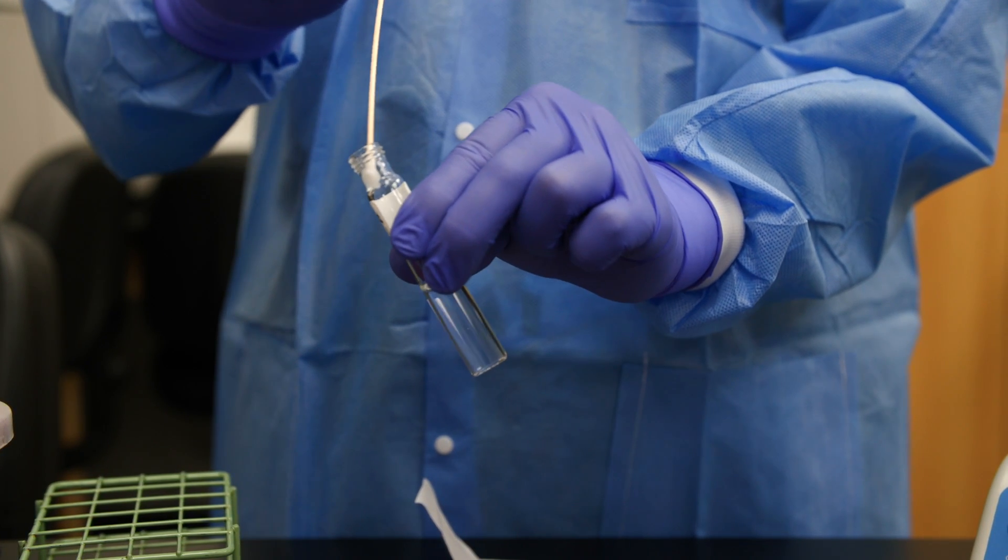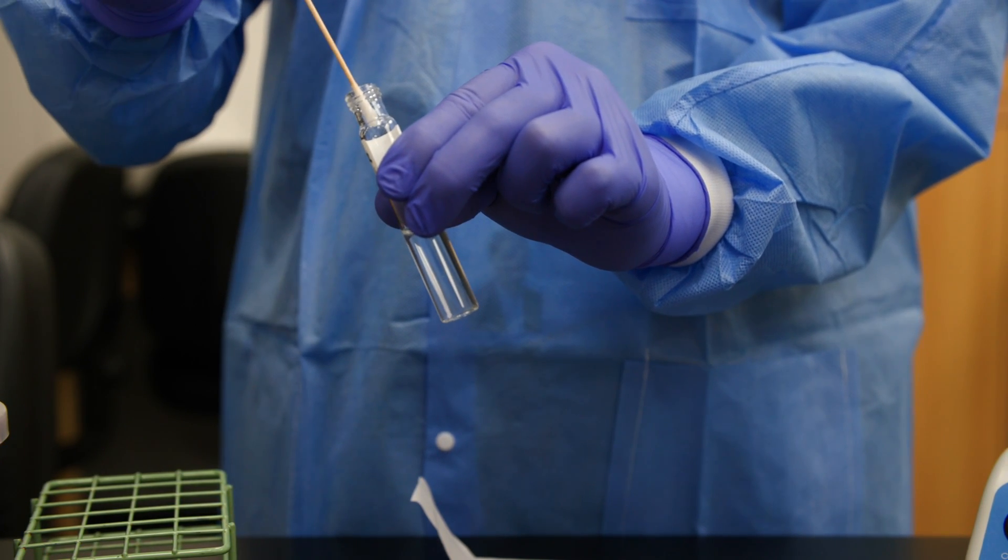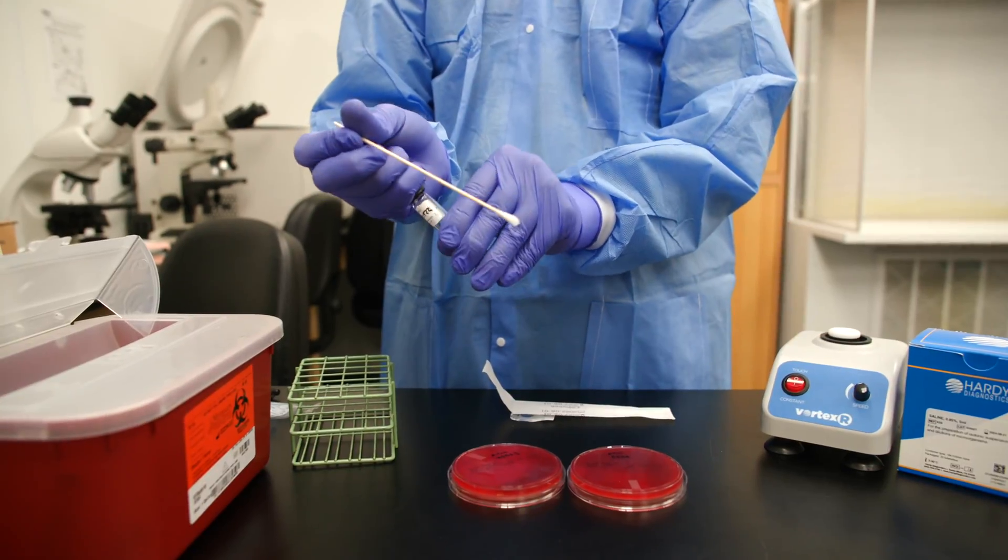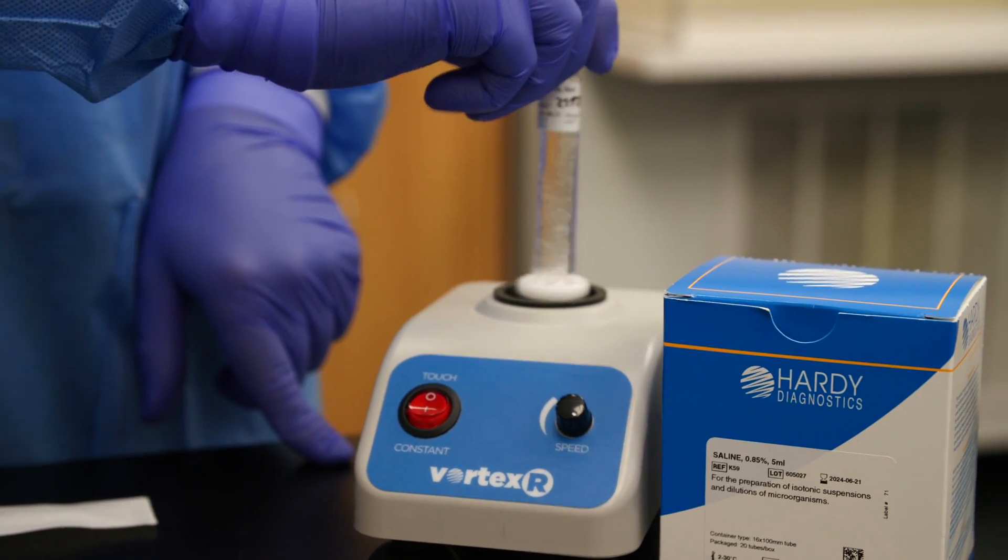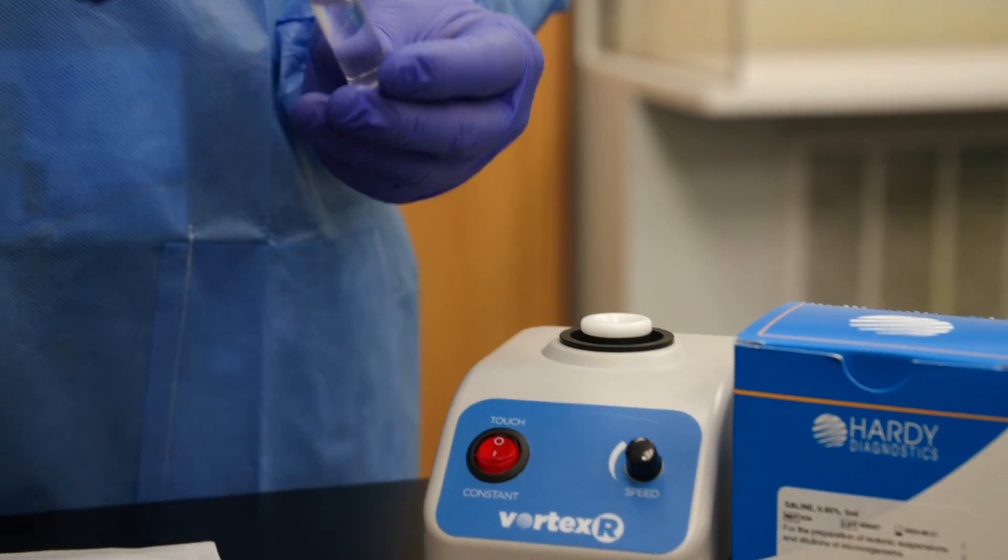Before removing the swab from the tube, press firmly on the inside wall of the tube above the fluid level. This will remove excess fluid from the swab. Firmly secure the cap to the suspension and vortex briefly to homogenize. Gently invert several times if you are not using a vortex mixer.